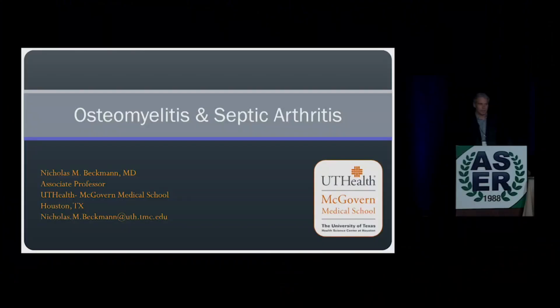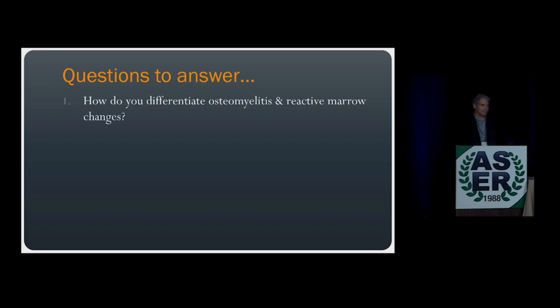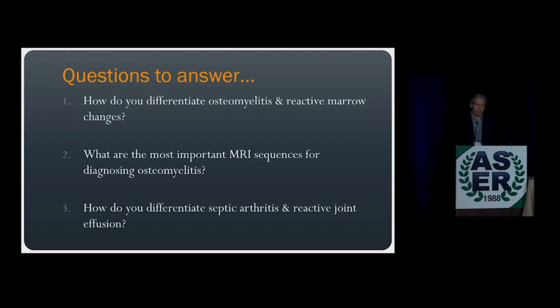I'll be kicking things off by talking about imaging of osteomyelitis and septic arthritis. I have nothing to disclose. During this presentation, I have three questions I hope to answer. First, how do you differentiate between osteomyelitis and reactive marrow changes? Two, what are the most important MRI sequences for diagnosing osteomyelitis? And finally, how do you differentiate between septic arthritis and reactive joint effusion?